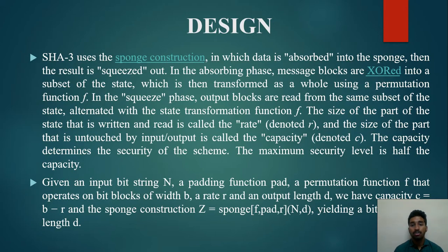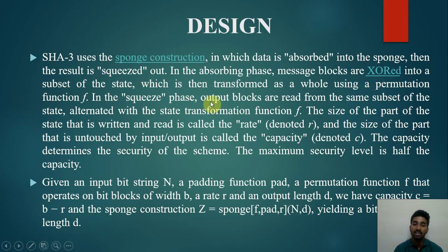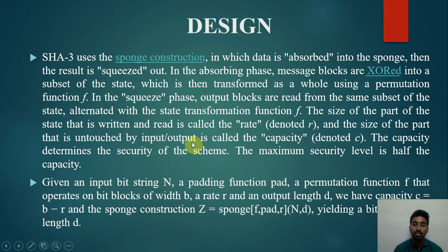In the absorbing phase, message blocks are XORed into a subset of the state, which is then transformed as a whole using a permutation function F. In the squeezing phase, output blocks are read from the same subset of the state, alternated with the state transformation function F. The size of the part of the state that is written and read is called the rate, denoted as R, and the size of the part untouched by input or output is called the capacity, denoted as C. The capacity determines the security of the scheme, and the maximum security level is half the capacity.